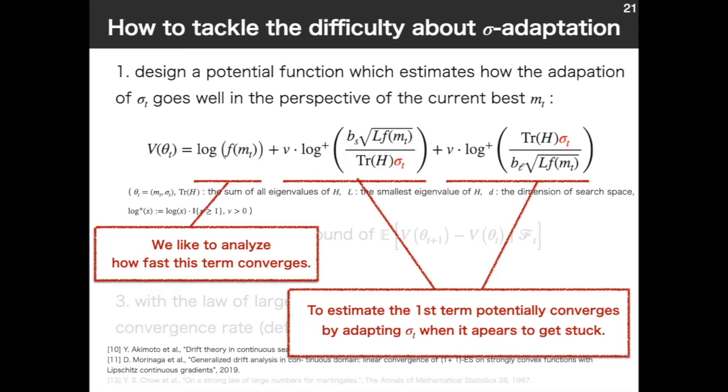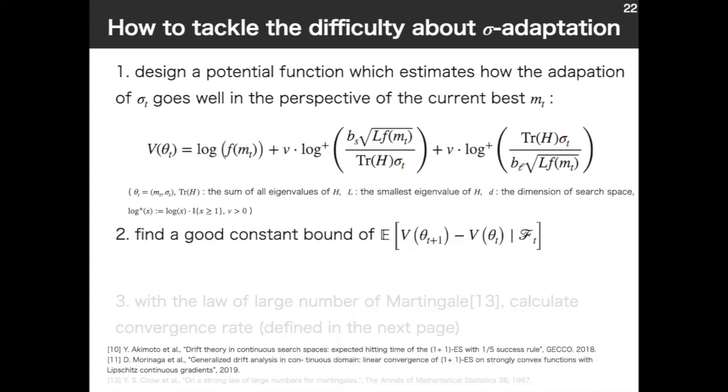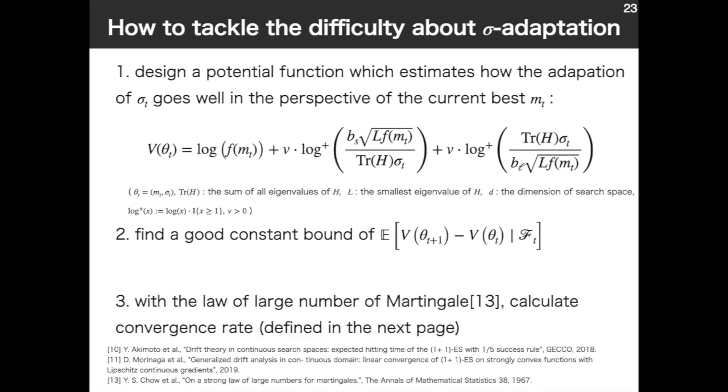If σ_t is too small or too large, the second or third term kicks in. In this case, the transition of log f(m_t) is almost zero, but there can be a constant transition of this potential function because the second term or third term indicates a potential progress of the optimization as σ_t changes with the adaptation mechanism of the (1+1)-ES. And the second step is to find a good constant bound of this expectation of one-step difference of the potential function b. And at last, with the law of large number of martingale, we calculate convergence rate, which defined in the next page.